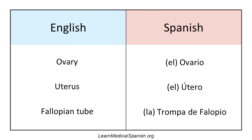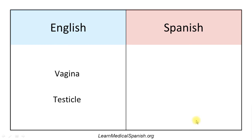Trompa doesn't mean tube — trompa means trump or trumpet. If you can imagine, the fallopian tube when it's drawn often looks a little bit like a trumpet shape. So that's why they use that terminology — trompa de Fallopio.